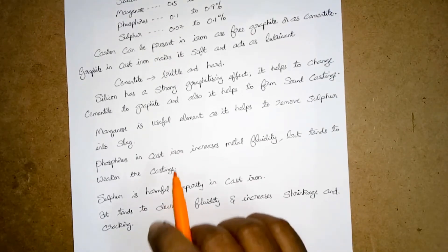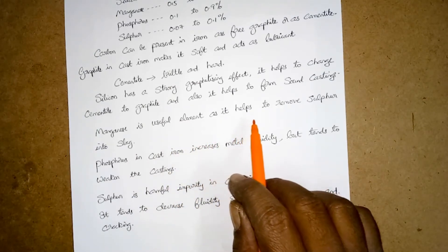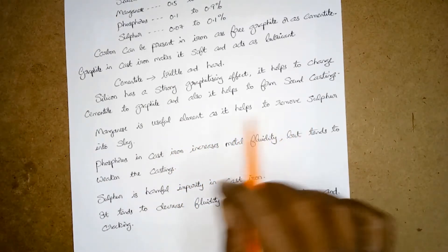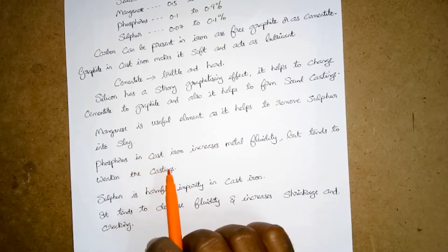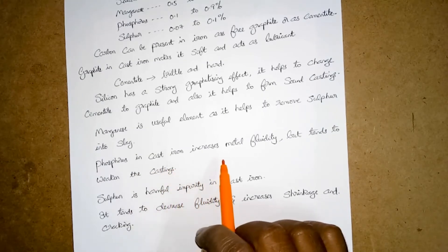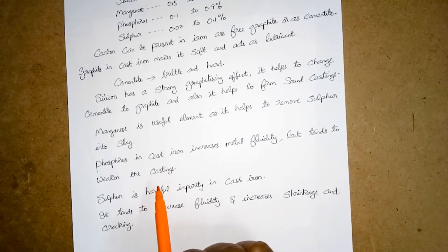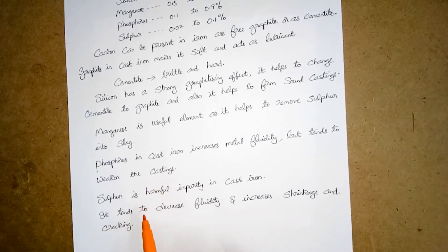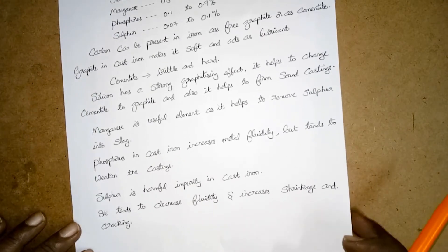Manganese is a useful element as it helps to remove sulfur into slag. Phosphorus in cast iron increases metal fluidity but tends to weaken the castings. Sulfur is a harmful impurity and increases shrinkage and cracking.